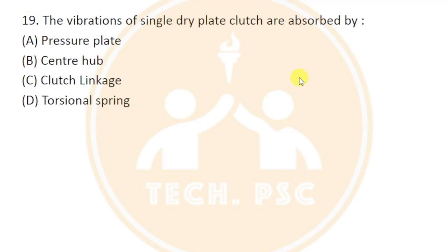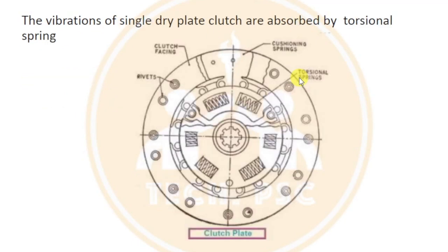The vibrations of a single dry plate clutch are absorbed by the torsional spring, also called the cushioning spring, which is added to the clutch disc. The vibration of a single dry plate clutch is absorbed by the torsional spring.